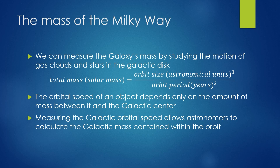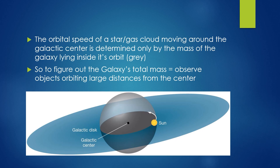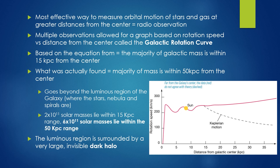The mass of the Milky Way can be measured by studying the motion of gas clouds and stars in the galactic disk, using the total mass in solar masses equals the orbit size in astronomical units cubed over the orbit period in years squared. The orbital speed of an object depends only on the amount of mass between it and the galactic center. Measuring the galactic orbital speed allows astronomers to calculate the galactic mass contained within the orbit. The orbital speed of a star or gas cloud is determined only by the mass of the galaxy lying inside its orbit, so to figure out the galaxy's total mass we must observe objects at larger distances from the center. The most effective way to measure this is with radio observations, since radio radiation is unaffected by interstellar absorption.